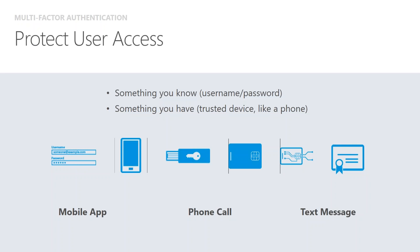The next piece of the suite is multi-factor authentication — something you might have seen certain websites use where you need a separate step to get into your account. Maybe your bank or credit card company does this. Multi-factor authentication is something you know — your username and password — and something you have, usually a trusted device like a cell phone or tablet. It's very easy to set up: as simple as installing an app on your smartphone. If you don't have a smartphone, it can give you a phone call or shoot you a text message that you need to reply to. This really helps add that extra layer of protection where someone can't just guess your password — they would need your password and your phone to get in.